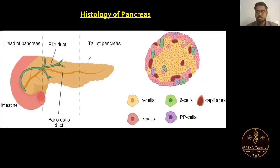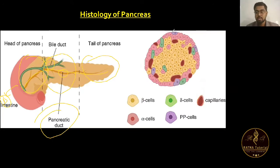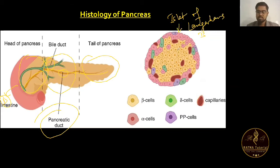Looking at the histology: in the Islets of Langerhans, the yellow-colored cells are beta cells. The green-colored cells are delta cells. The remaining structures are blood capillaries.